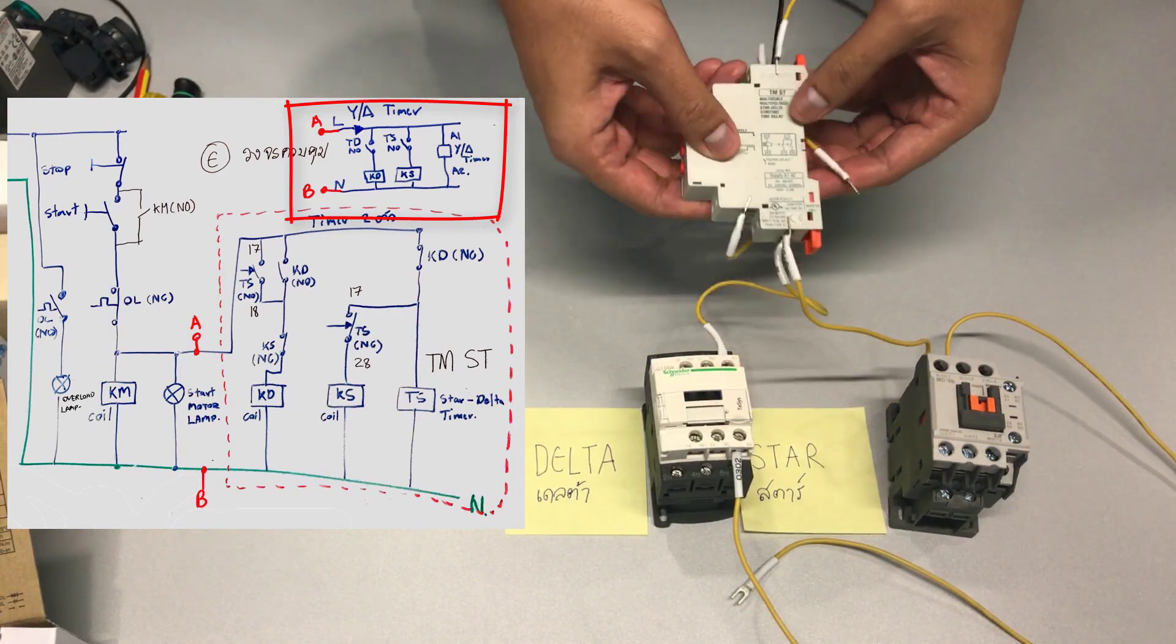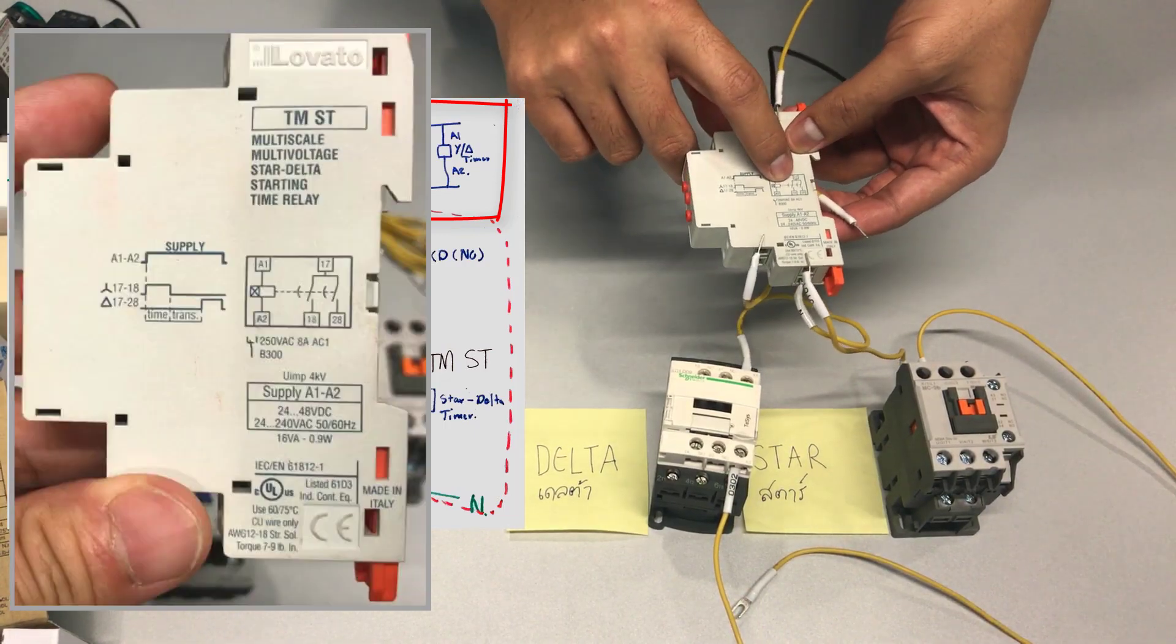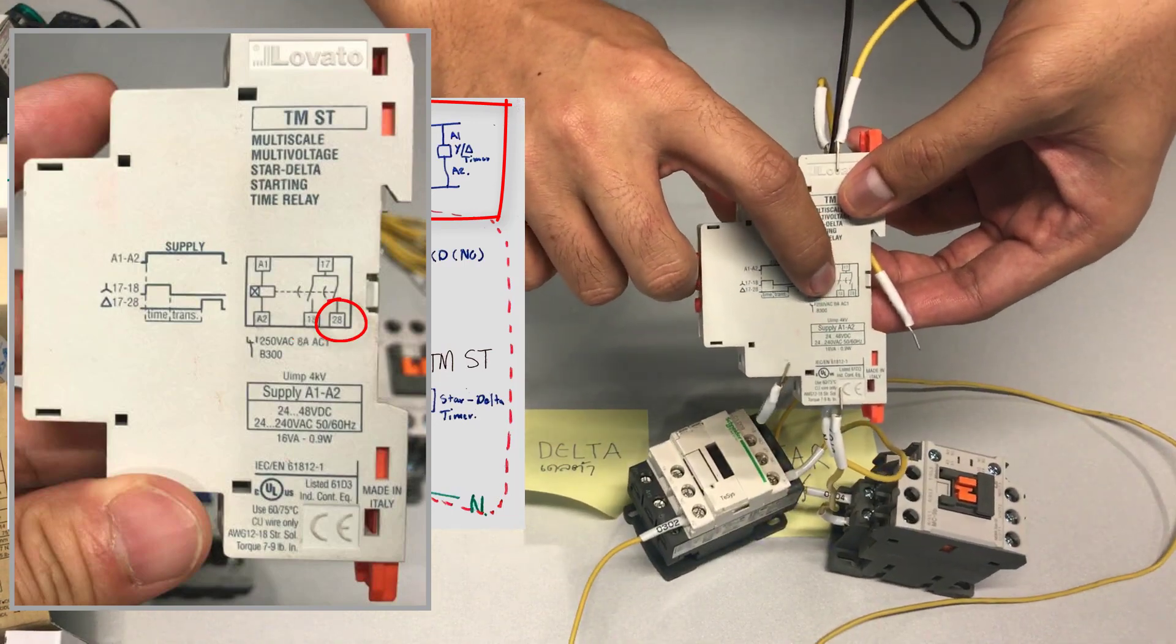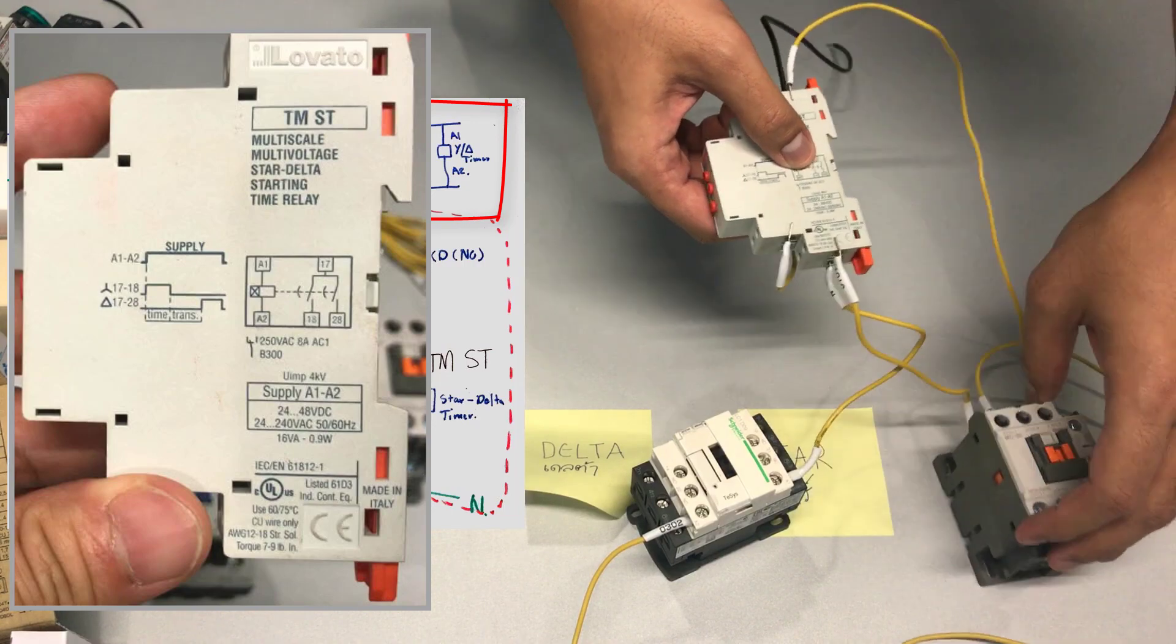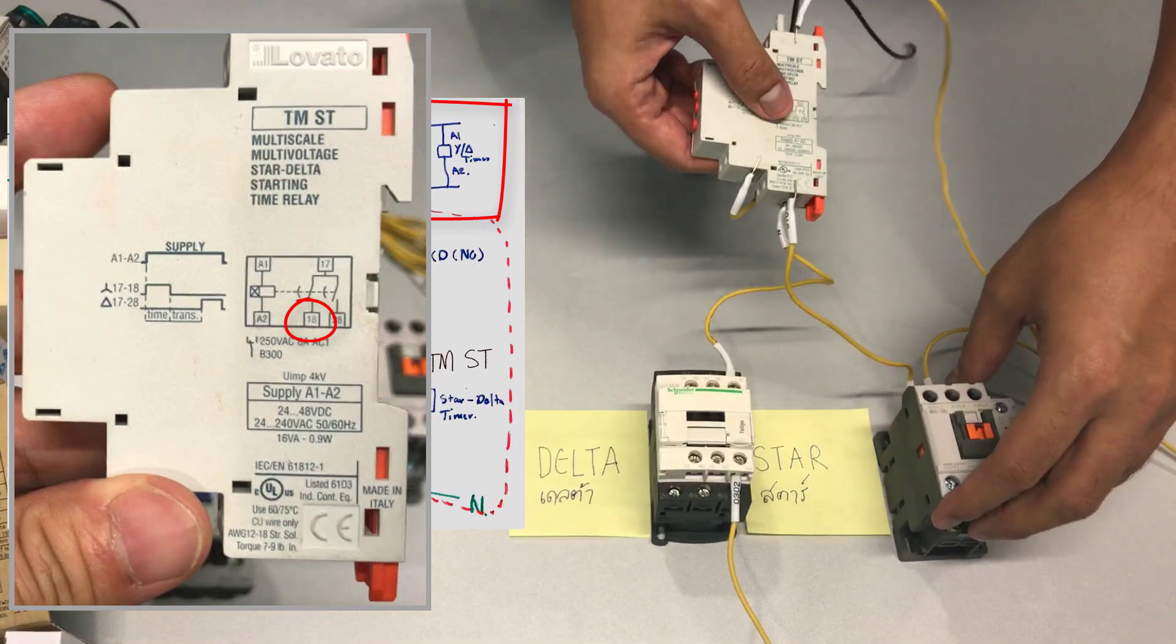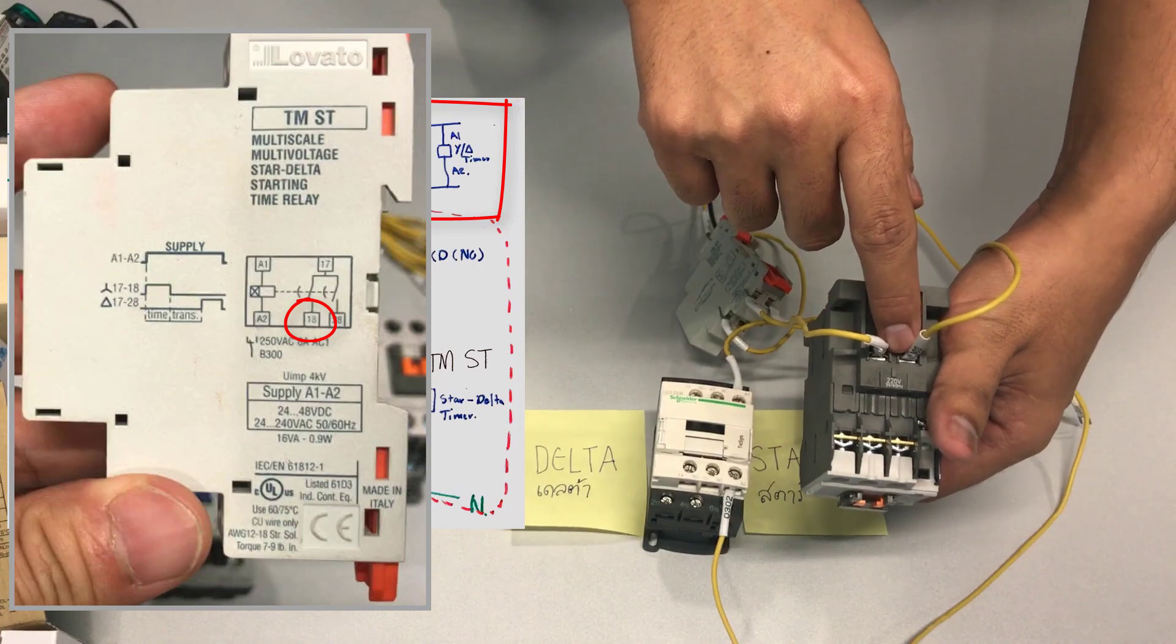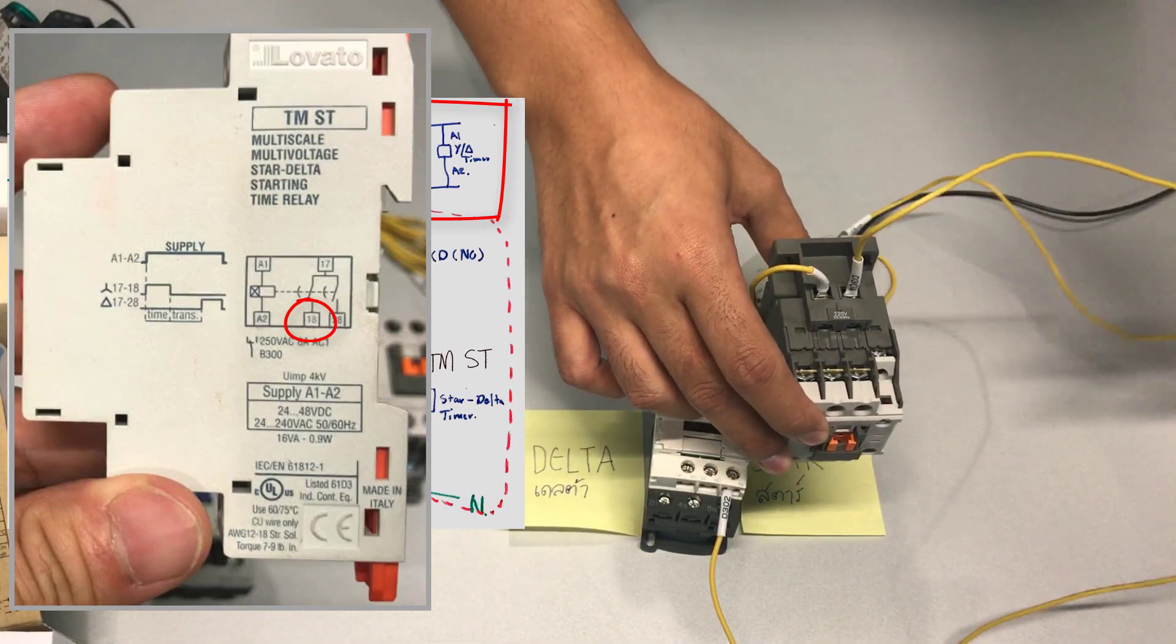Then we'll connect the timer to the contactor's auxiliary contact. There's 18 here and 28 here. So from the 18 it is connected to the star contactor which is 1 here into the coil that takes 220 volts. On the contactor it will label A1. A2 from the contactor goes to the neutral completing the circuit.